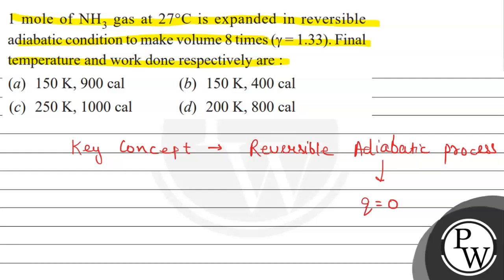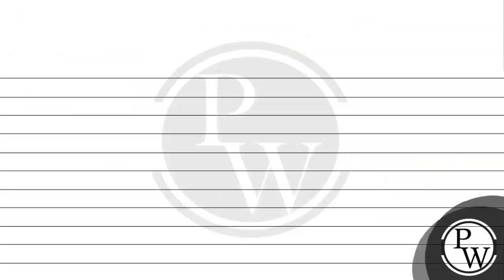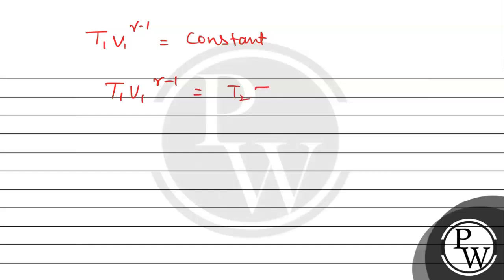According to the given question, we have to find the final temperature and the work done. There is a relationship between temperature and volume for the reversible adiabatic process: T₁V₁^(γ-1) = T₂V₂^(γ-1).